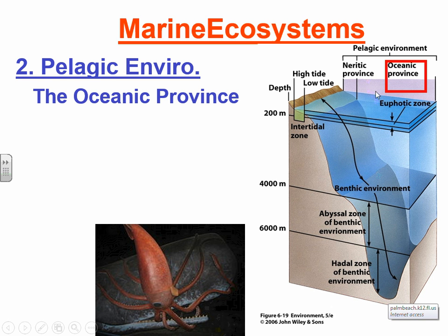The other portion of the pelagic environment is the oceanic province — the largest part of the marine environment, containing 75% of the ocean's water. It extends from the end of one continental shelf to the next and does not overlie the continental shelf. Mostly cold temperatures prevail, except in the euphotic zone where light penetrates. Organisms adapted to live deep in the oceanic province have special adaptations to survive.